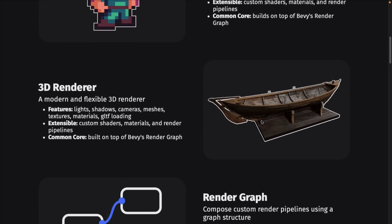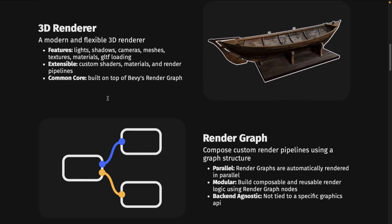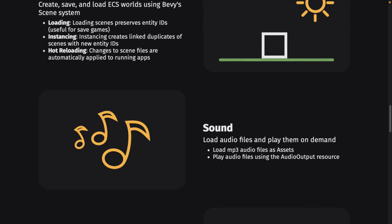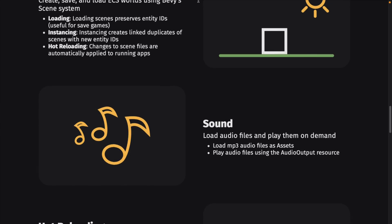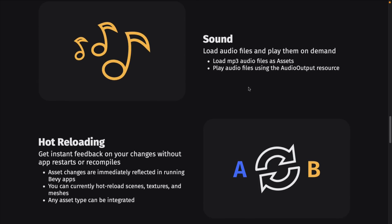It has a 2D renderer, but it also has a 3D renderer, and a big part of the 0.6 release is updates to that 3D renderer — it basically got rewritten. There is a render graph. It is cross-platform; as you're seeing right now, it is running on my M1 Mac. It also runs on Windows, various different Linux flavors, and Android and iOS are on the way. You can also target the web, which is quite cool. They've got their own UI system and support for scenes, so you can create, save, and load ECS worlds using their built-in scene system — a way of creating saved games and states. There is audio support, including the ability to load MP3 files as assets and play audio out.